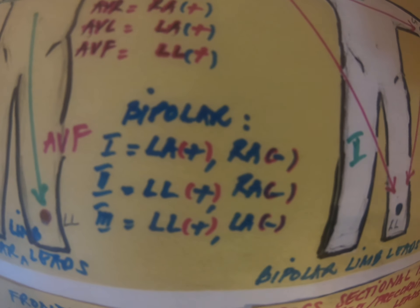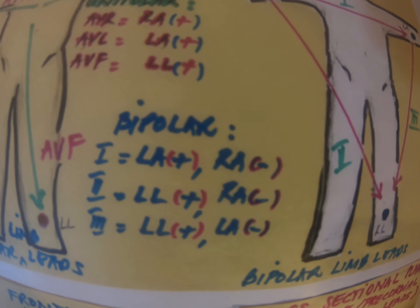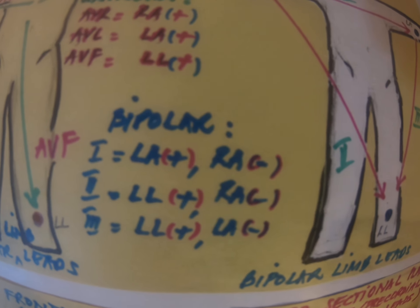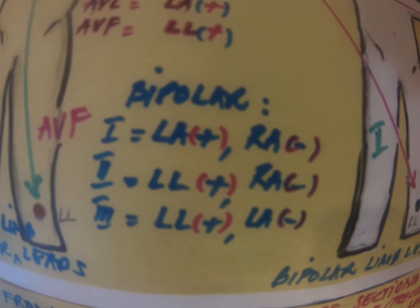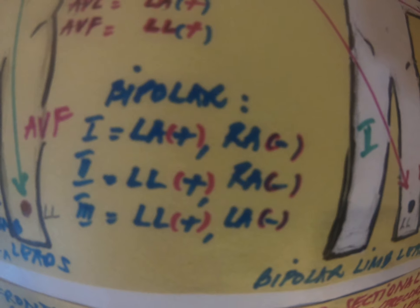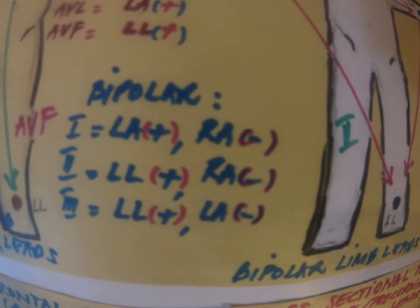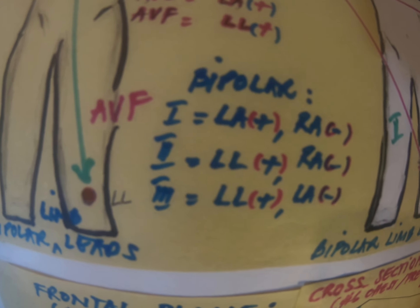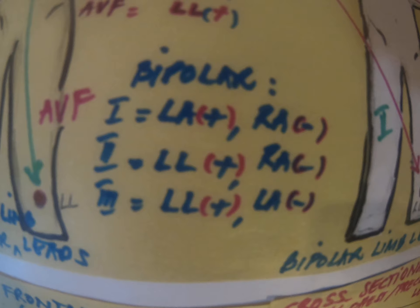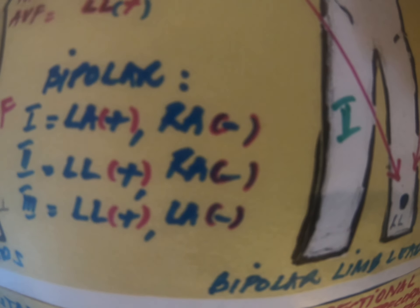Lead 1 has the left arm as positive and the right arm as negative. Lead 2 has the left leg as positive and the right arm as negative. Lead 3 has the left leg as positive and the left arm as negative.